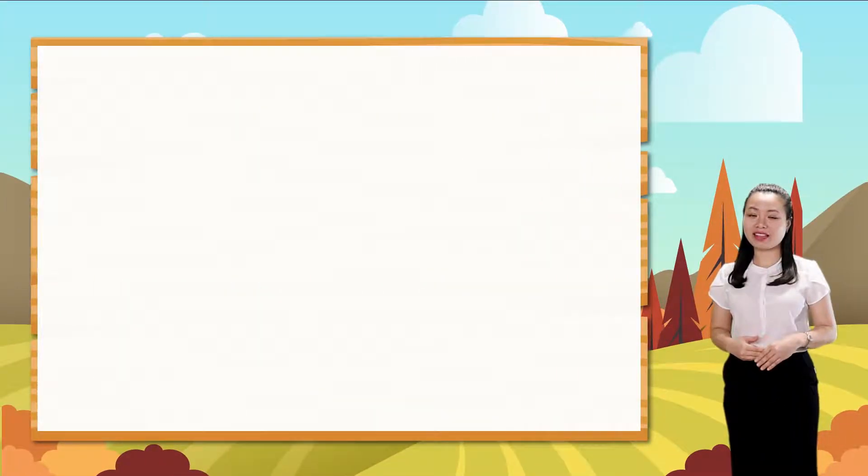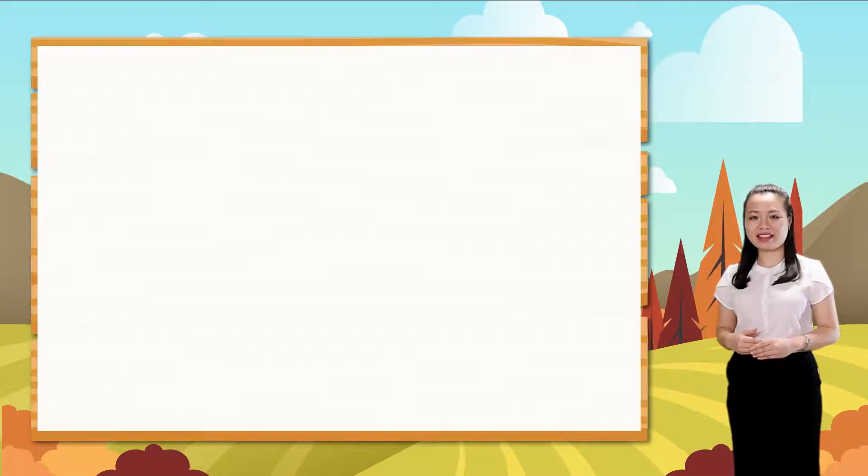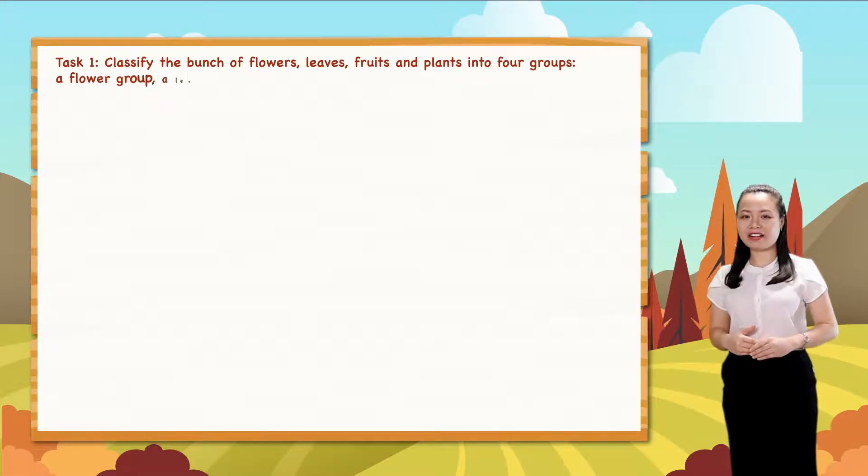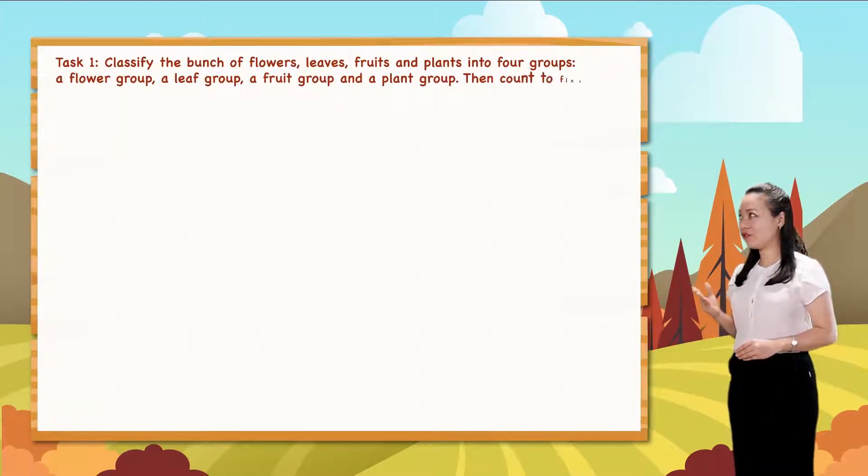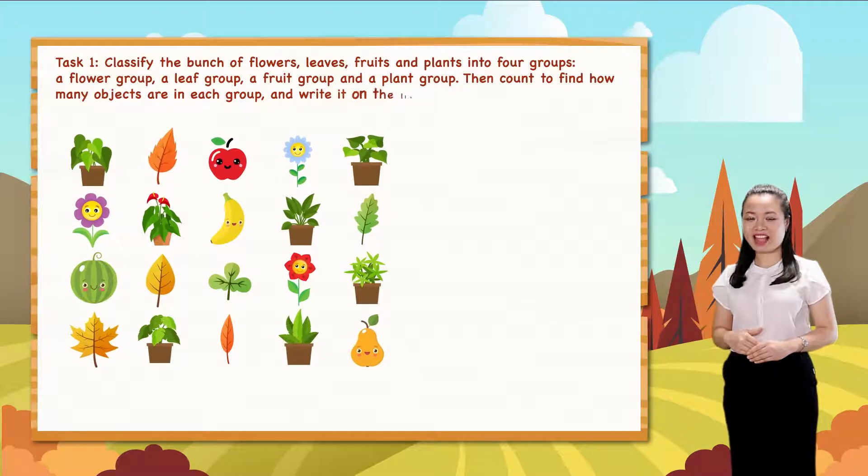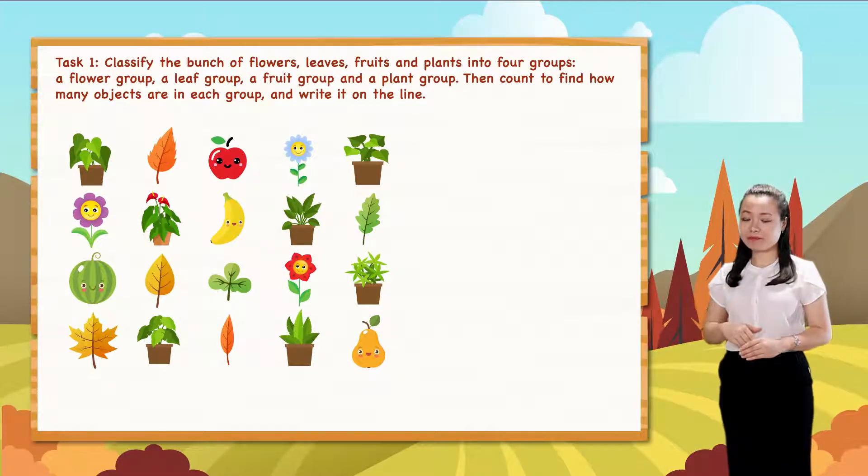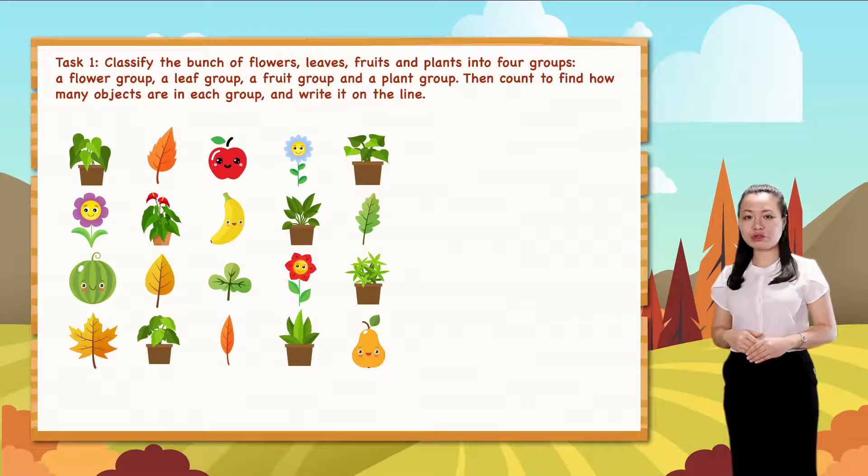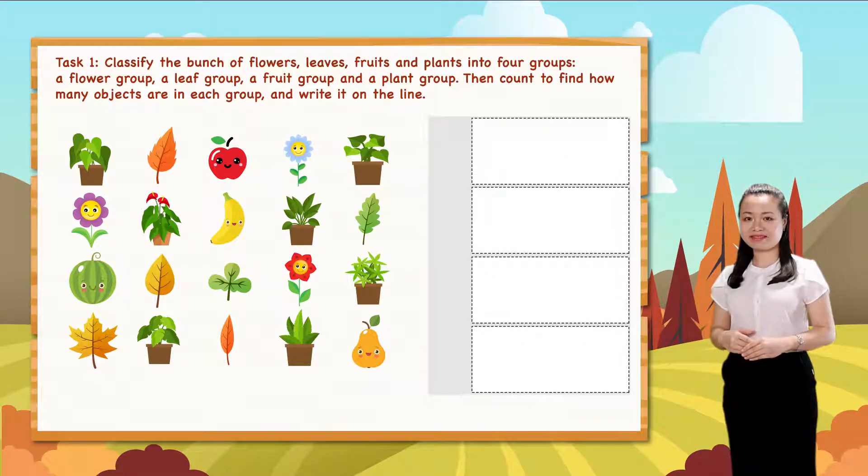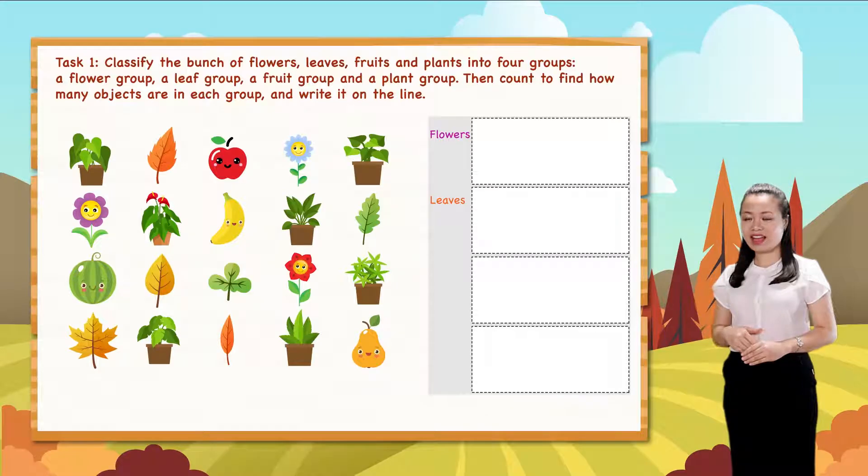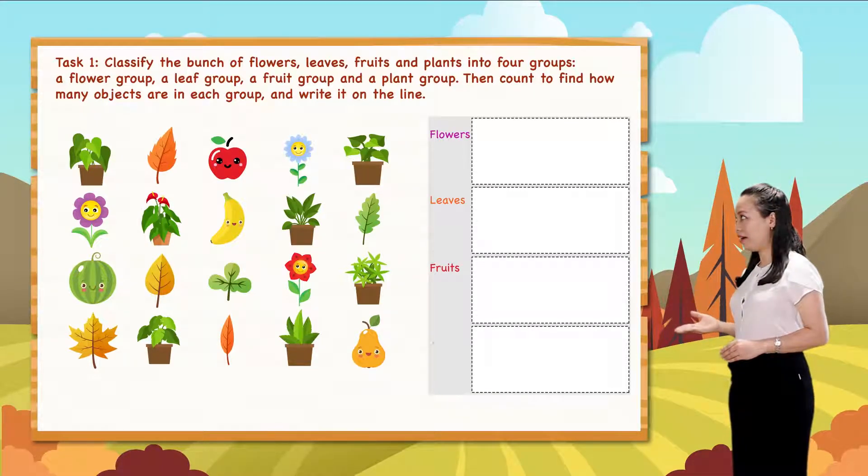Now let's take on a task together. Task one. Classify this bunch of flowers, leaves, fruits, and plants into four groups: a flower group, a leaf group, a fruit group, and a plant group.